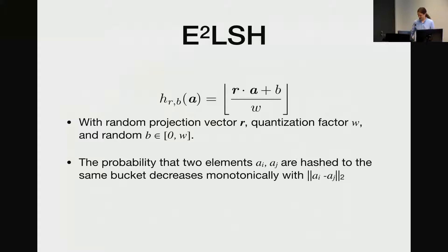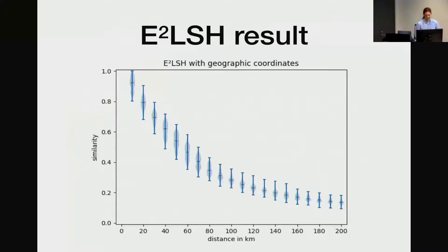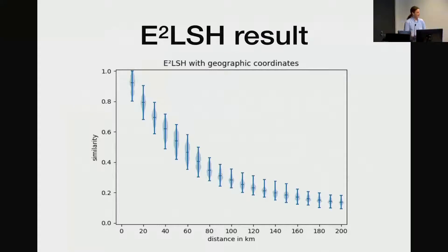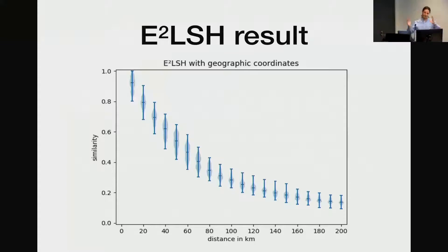Now if you look at the violin plot, it looks way better. Close distances are very similar, and far distances are not very similar. So I was very pleased with myself. Now let's go back to the problem I had in the beginning — the subset of the NC voter data set. I split the features into three groups: all the name-related features, the address-related features, and the rest — age, gender, and phone number. Then I inserted them into bloom filters where each group flipped 200 bits, to have roughly equal contribution.